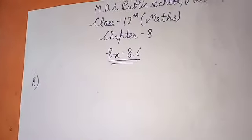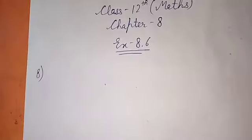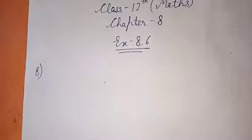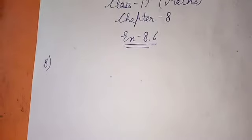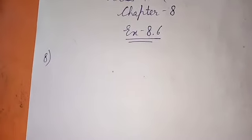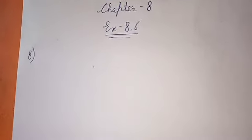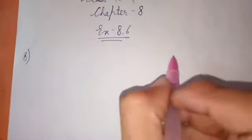Question number 8: Show that the rectangle of maximum perimeter which can be inscribed in a circle of radius A is a square of side A√2.